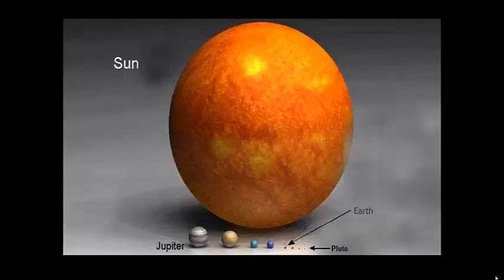If you put Earth into the perspective of the size of the Sun, the Sun is huge. It looks like the size of a bowling ball, and Earth would be the size of a grain of sand, with Jupiter being perhaps the size of a marble.